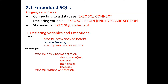There are different language constructs available in embedded SQL. The first construct is connecting to the database, declaring variables, and statements. Whenever you want to connect between a Java application and the database, we use the syntax EXEC SQL CONNECT, which is used to connect the database from the host programming language. The second construct is declaring variables using EXEC SQL BEGIN DECLARE SECTION, ending with EXEC SQL END DECLARE SECTION. To execute an SQL statement, we use EXEC SQL followed by the SQL statement.